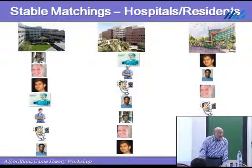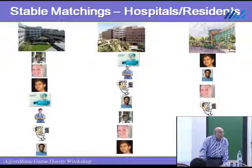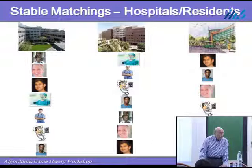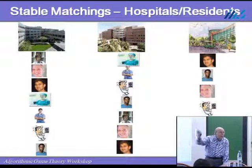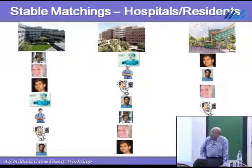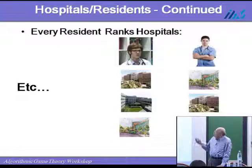There are about 18,000 graduating students. The hospitals don't rank all of them — maybe they rank 200 or 300 if they want 50 or 100 residents. But for the purpose of this talk, you can imagine that they rank all of them. In practice, they rank them 1 to 100, and the others are minus infinity. In the same way, every resident ranks the hospitals.